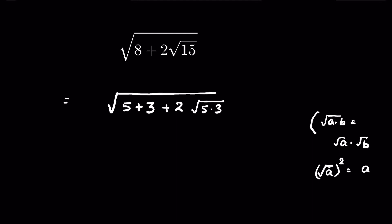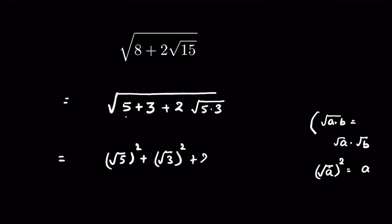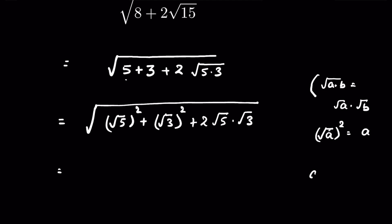So we can write 5 as square root of 5 squared, and 3 as square root of 3 squared, because removing the square root gives back 5 and 3. This gives us square root of 5 squared plus square root of 3 squared plus 2 times square root of 5 times square root of 3, all under a square root.